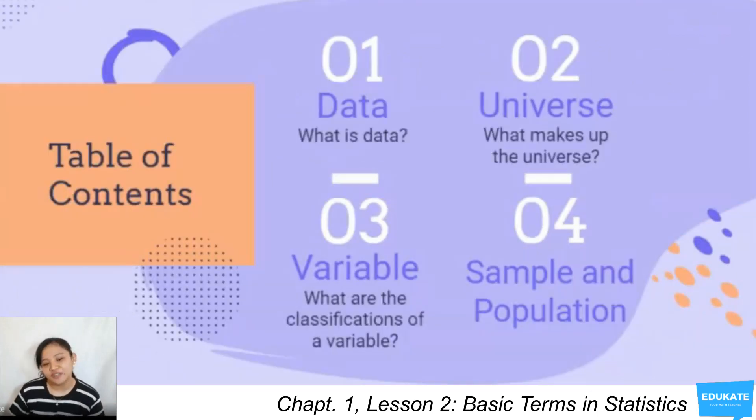Now for our table of contents, we're going to tackle four basic terms in statistics: data, universe, variable, sample, and population. Let's hit the first one, which is data.